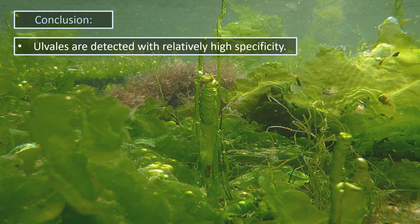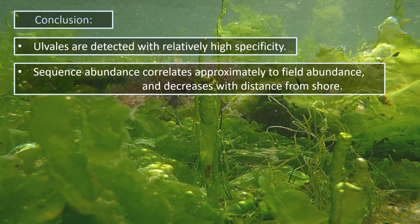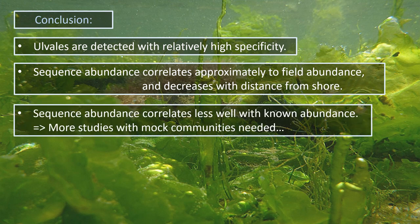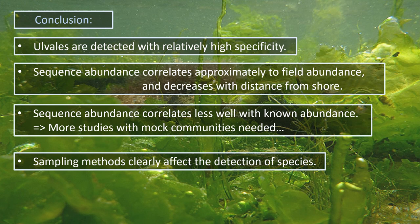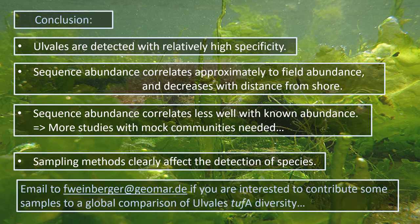So our method seems to detect Ulva and related species with relatively high specificity. It detects species that are known to be present in a sample, and read abundances in field samples seem to correlate approximately with expected abundances. However, results from our first lab experiments suggest that different species are not detected with exactly the same probability, so more studies with mock communities are needed and are currently underway. Also, the different sampling approaches clearly resulted in different read abundances, although they did not differ significantly with respect to the species detected. Please contact me if you are interested in contributing samples to a hopefully global comparison of Ulva tufA diversity later this year.